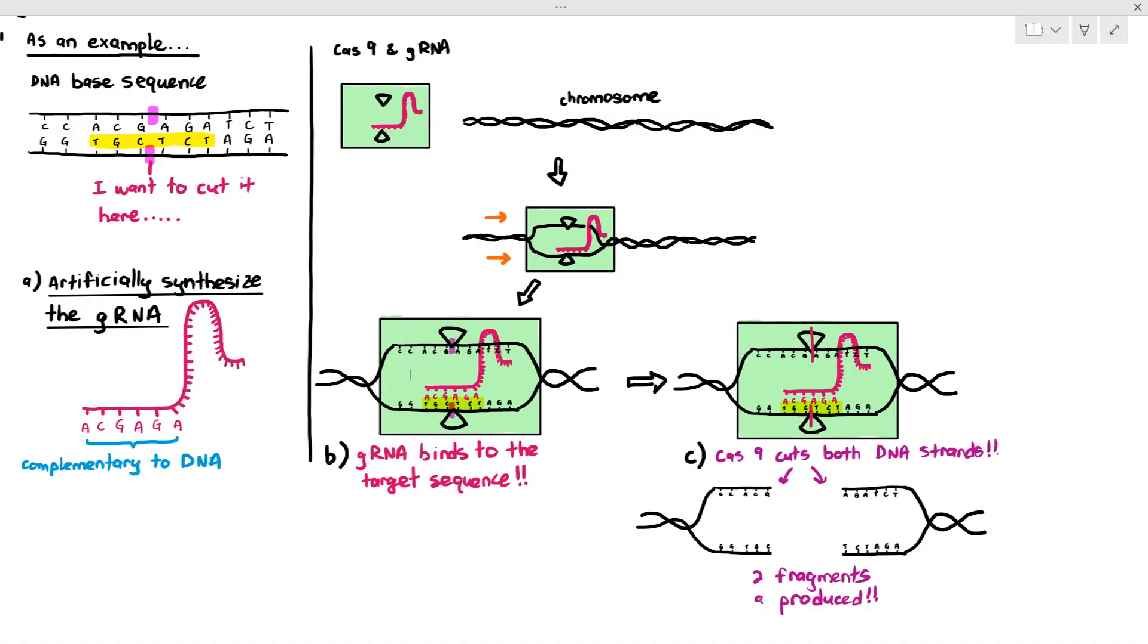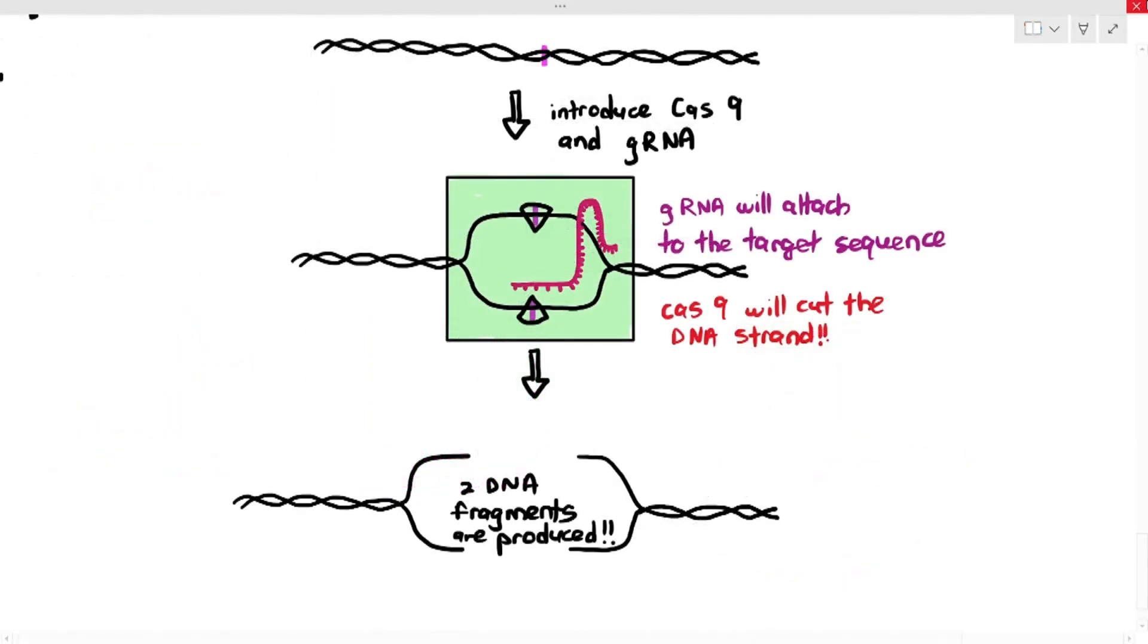You couldn't use the restriction enzyme to do it, but you can use the Cas9 enzyme to cut both DNA strands. And now, the strand has been separated. So, long story short, we introduce the Cas9 and gRNA. The gRNA will bind to the target sequence through complementary base pairing, and the Cas9 will cut the DNA strands at a specific region.